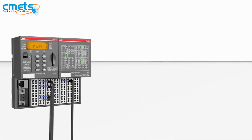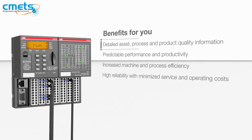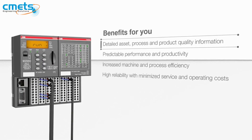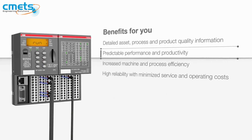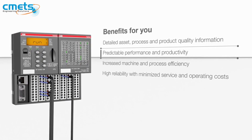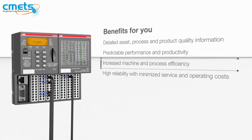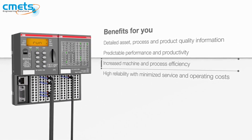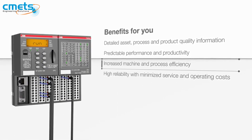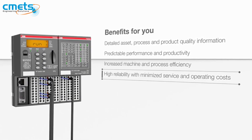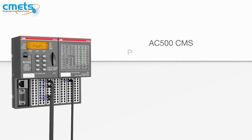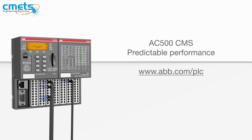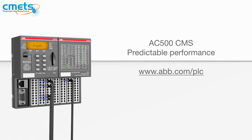The AC500 CMS, the solution for online condition monitoring, allows you to achieve higher and predictable performance. Check out abb.com/plc for more.